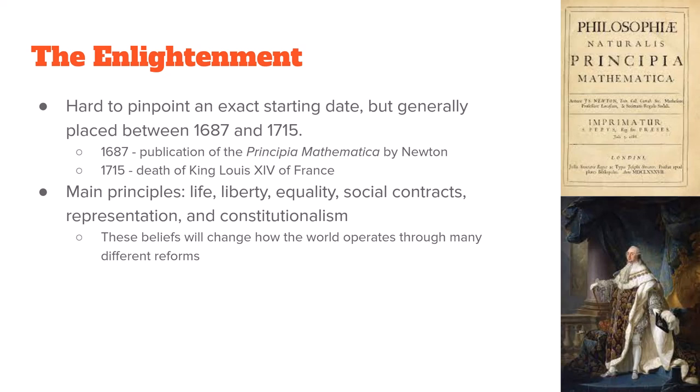The main principles of the Enlightenment can really be simplified to self-evident ideals: life, liberty, equality, social contracts, representation, and constitutionalism. These beliefs are going to be used to attempt to change and reform the world of the 1700s. They challenge the social and political systems of the day in Europe and eventually the Americas as well.